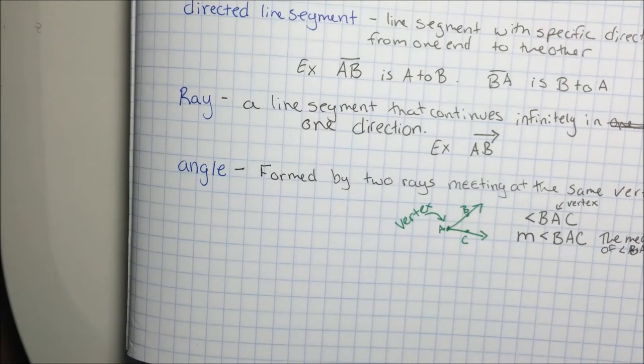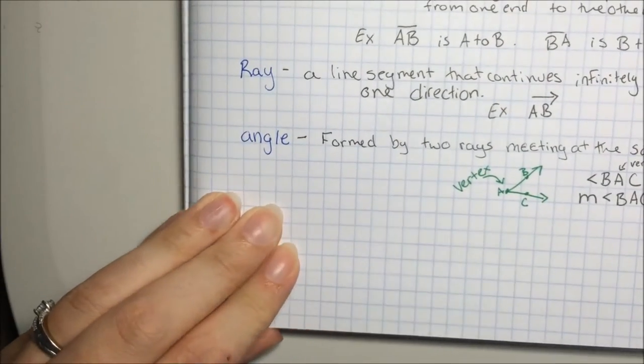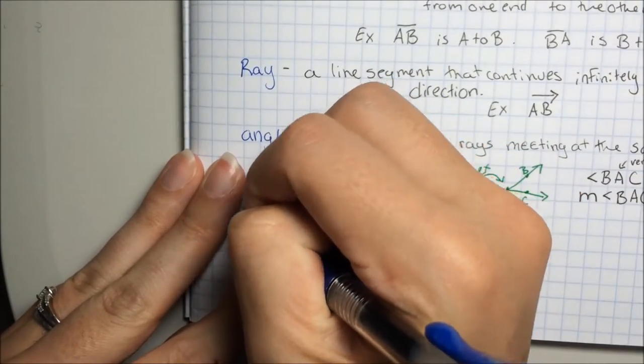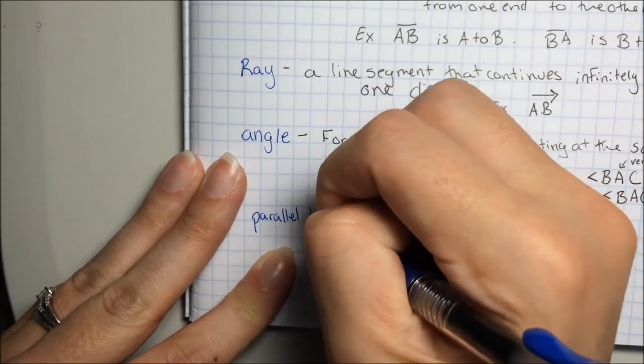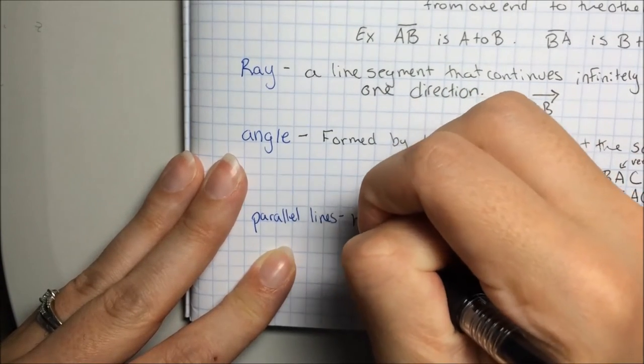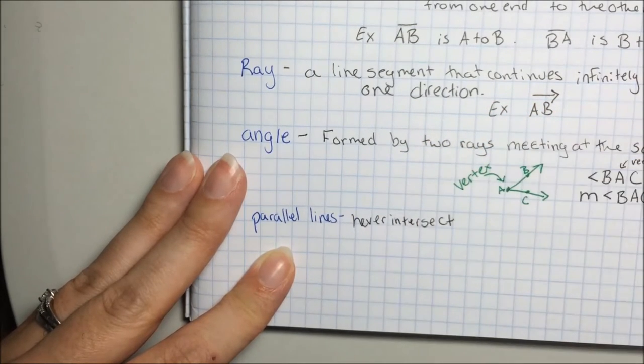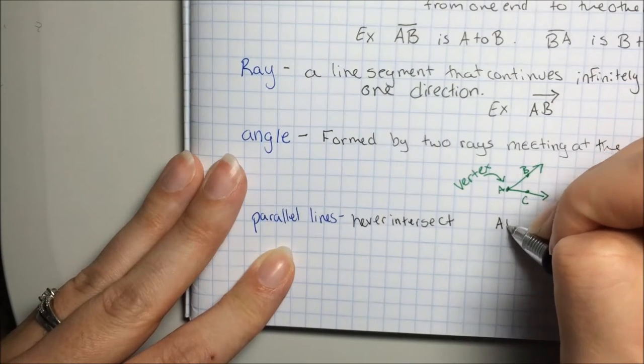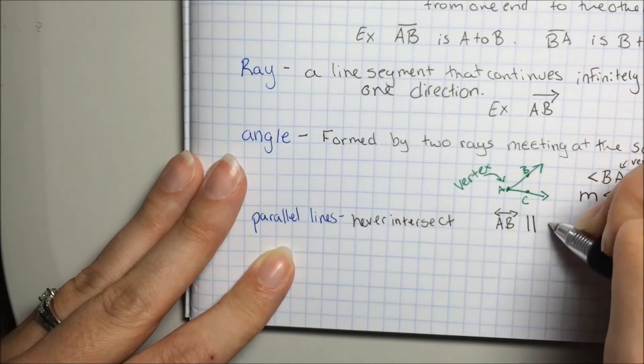We're going to talk next about what it means for two lines to be parallel. So parallel lines never intersect. If I want to write notation to show the two lines are parallel, perhaps AB is parallel to CD.